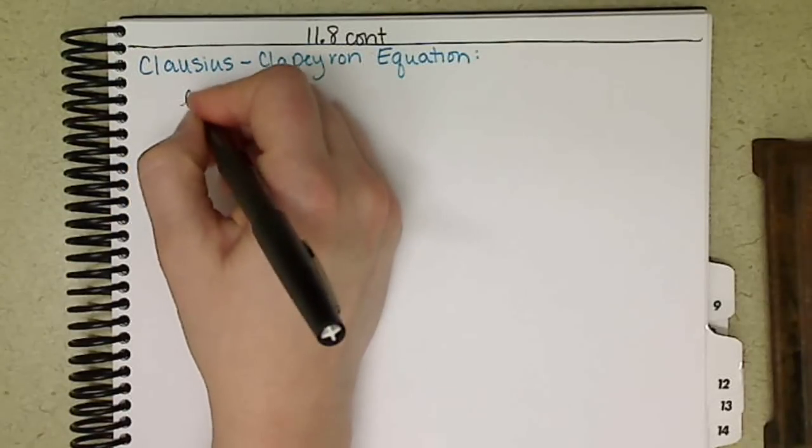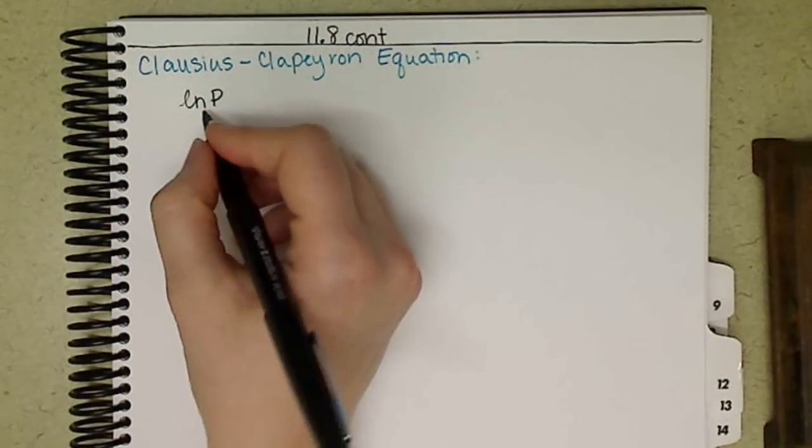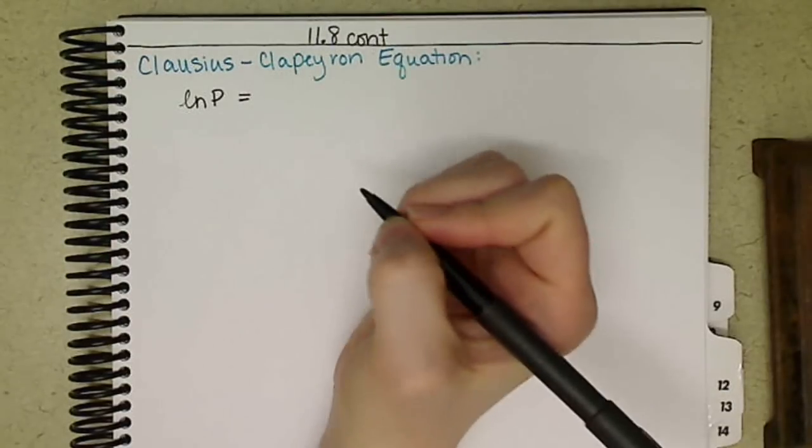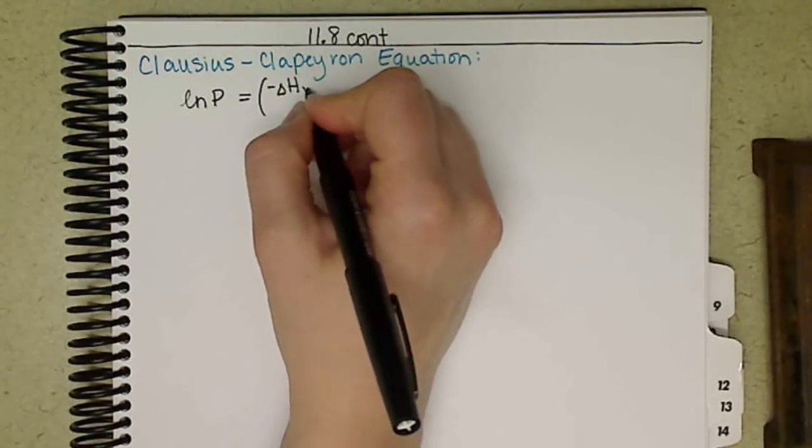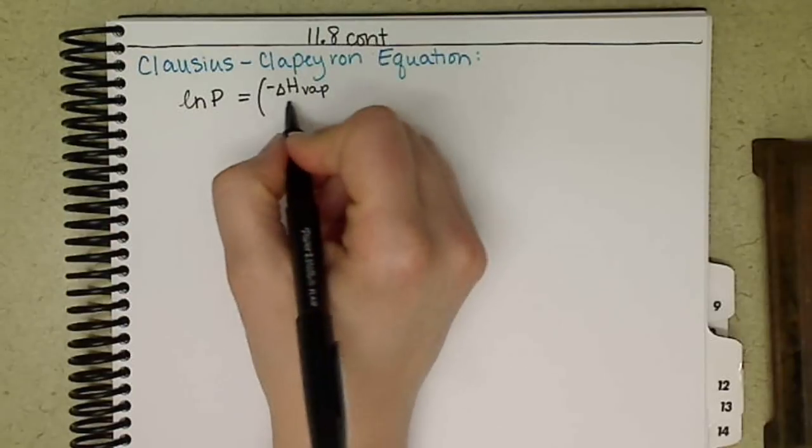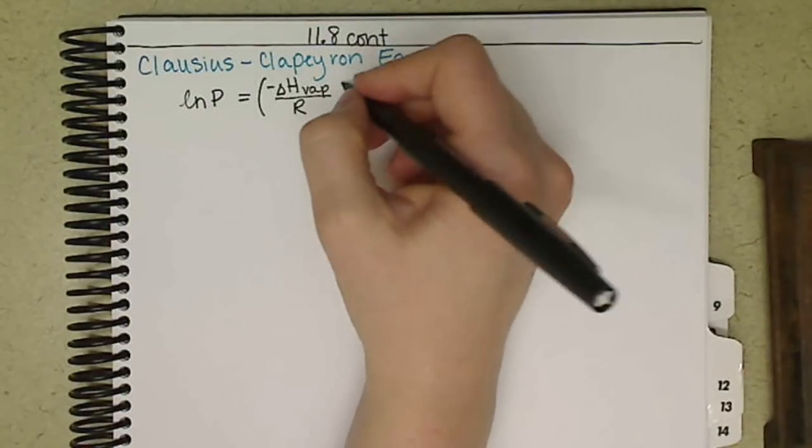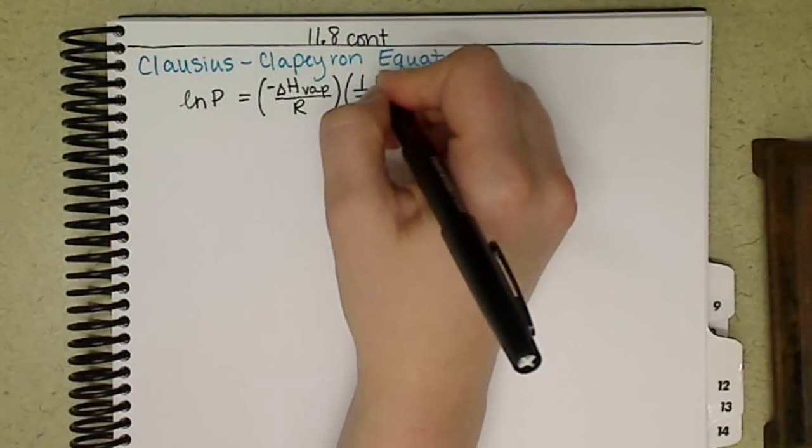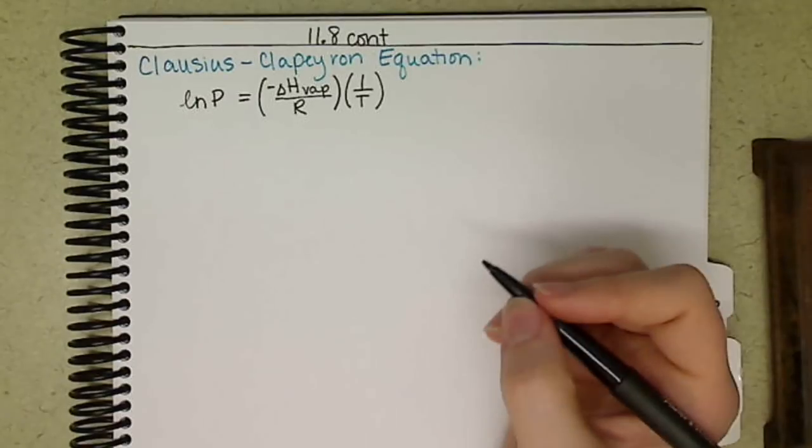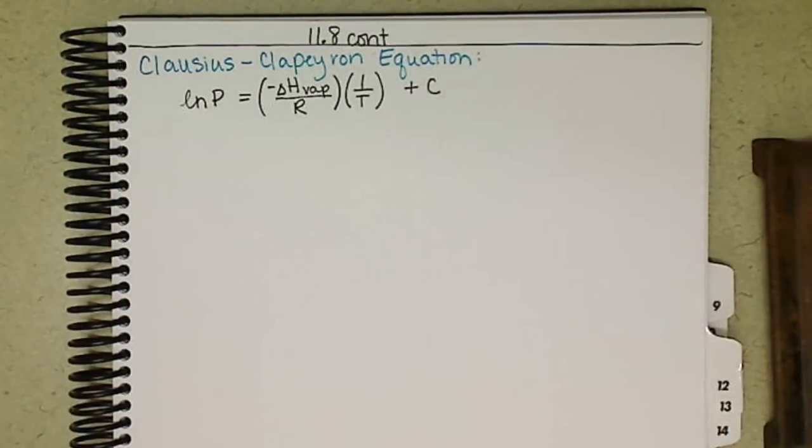The equation tells us that the natural log of P will be equal to the negative delta H of vaporization divided by R, multiply that by 1 over T, and plus some constant C.